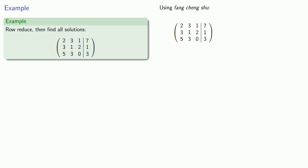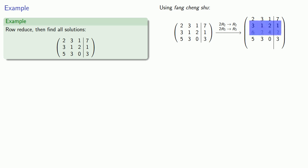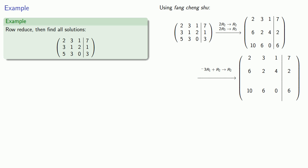So we'll start with our augmented coefficient matrix. The first row pivot is 2, so we'll multiply the other two rows by 2. If we multiply the second row by 2, we get 6, 2, 4, 2 as our new second row. And if we multiply the third row by 2, we get 10, 6, 0, 6 as our new third row. Now to eliminate the entries below that first row pivot, we can multiply the first row by negative 3 and add it to the second row. Multiplying the first row by negative 3 gives us negative 6, negative 9, negative 3, negative 21.